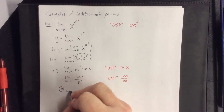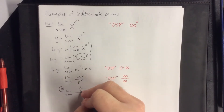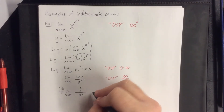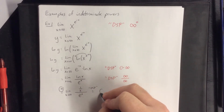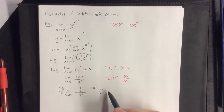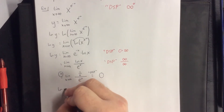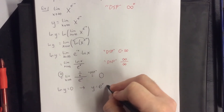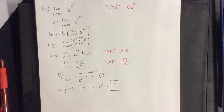Applying L'Hôpital's rule, we have the limit as x goes to infinity where the numerator becomes 1 over x and the denominator stays as e to the x. Allowing x to go to infinity, the numerator goes to 0 and the denominator goes to infinity — that equals 0. This is not our final answer though; this is what the natural log of y equals. So because the natural log of y is equal to 0, y equals e to the 0 power, which is 1.